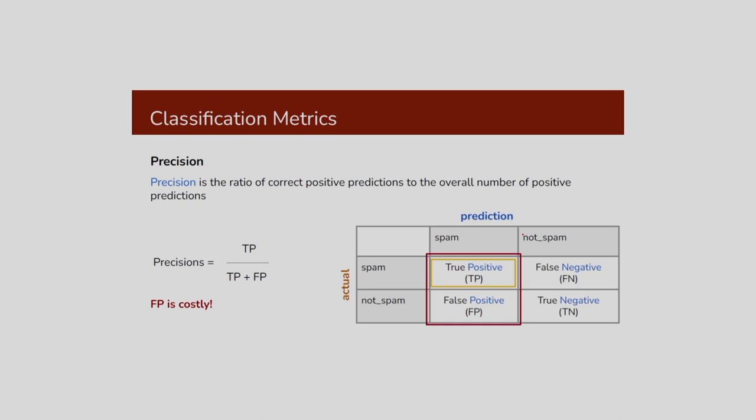The next parameter is precision. Precision is the ratio of correct positive predictions to the overall number of positive predictions. The overall number of positive predictions is TP + FP. If the false positive is 0, then precision equals 1. In a classification problem, if you want to give importance to the false positive, then you have to consider this metric — the precision.